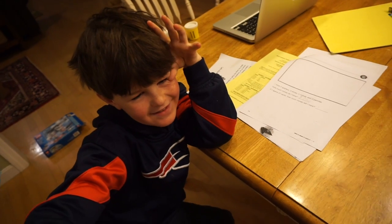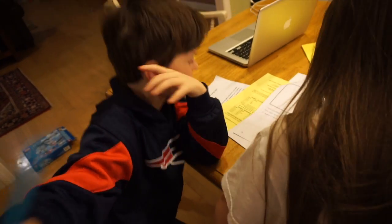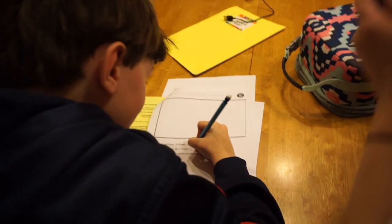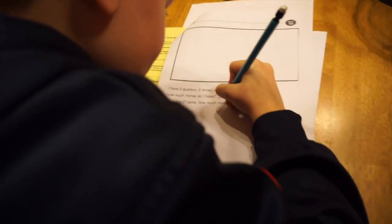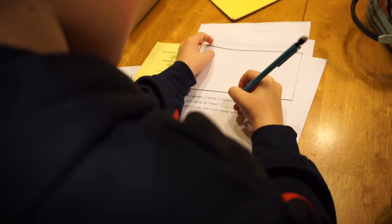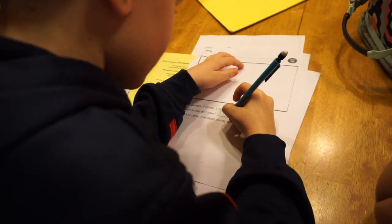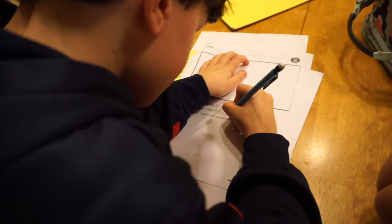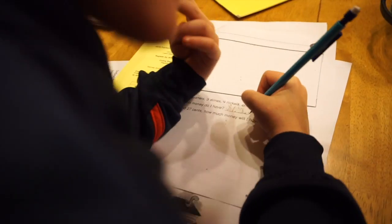So you write your dollar sign, and you write your one and your decimal point, not your period, your decimal point. And then you think about where the two is in two cents. Is it 99 cents? No, it's two cents.